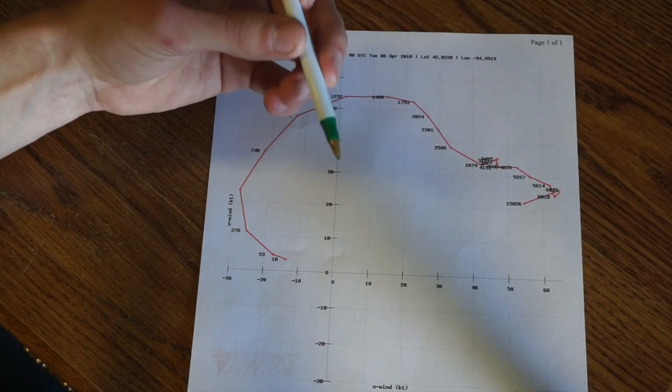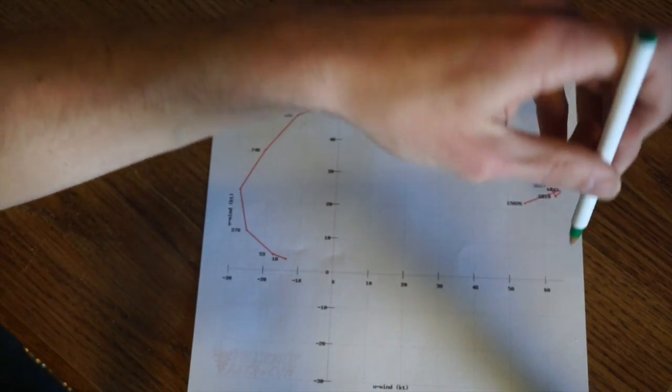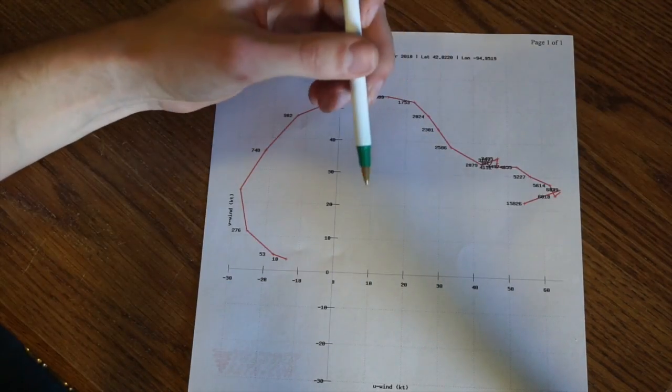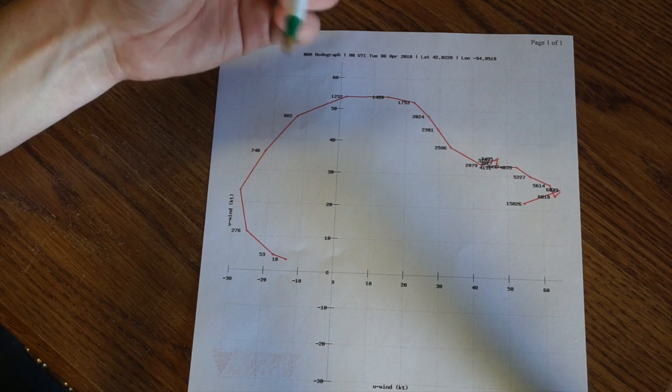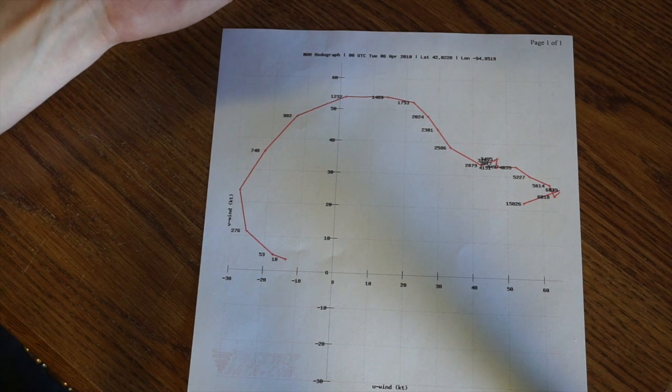So if you just have straight line acceleration and wind shear in one direction, that will be good, because your updraft will not be interrupted by the rain. The rain will be falling eastward. And so that will create just a large hail event, straight line winds.